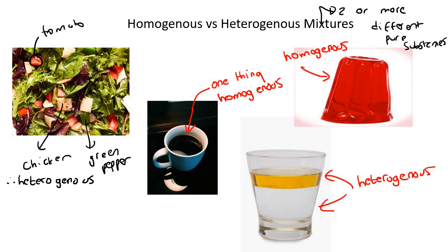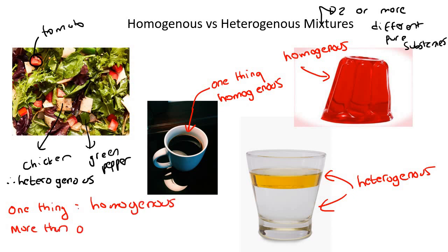So we're going to do some more examples on the next slide, but I think you get the idea. When it only looks like there's one thing, that's homogeneous. When it looks like more than one thing, then we'll simply call it heterogeneous.